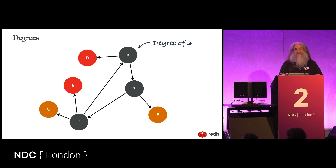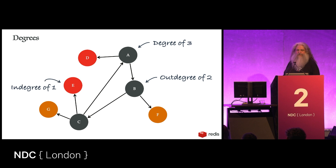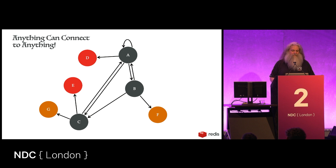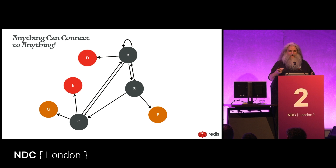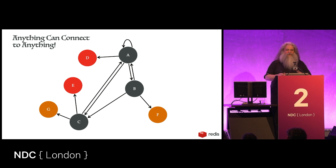We can describe nodes with degrees — the degree of a node is how many relationships it has. In a directed graph you can have out-degrees (outbound relationships) and in-degrees (inbound relationships). There really aren't any rules — anything can connect to anything. A node can even have a relationship to itself. The graph has been drawn on a two-dimensional surface so it looks good on screen, but that's just a convenience.